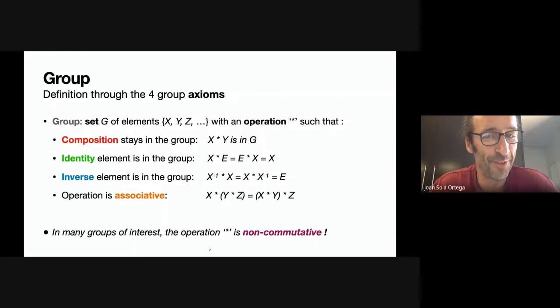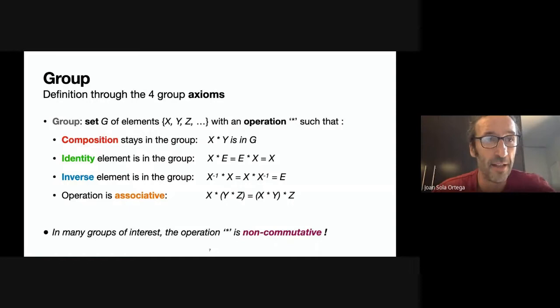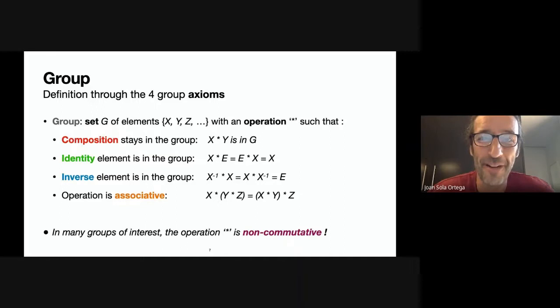Many groups have an operator which is non-commutative — x times y is not the same as y times x. This is very important. Some groups, the easy or trivial groups, are commutative, but they are the least interesting. The interesting groups are very quickly non-commutative. Non-commutativity is not a property — it's the lack of a property — but it's good to be aware that it's not necessary for a group.